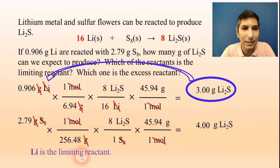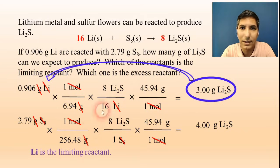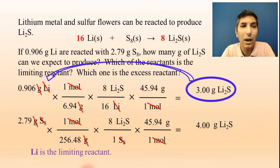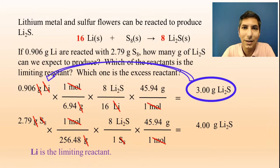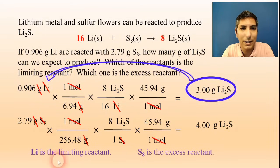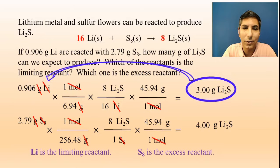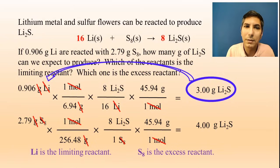Which one is the excess reactant? That's also asked in the problem. It's the other one — the one that doesn't run out first. So that would be the sulfur, S8, in this case. S8 is our excess reactant. That's how you solve a limiting reactant problem: do the three-step stoichiometry process twice and select the smaller of the two answers.